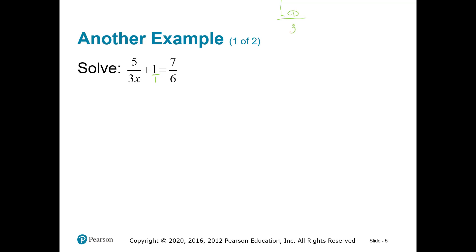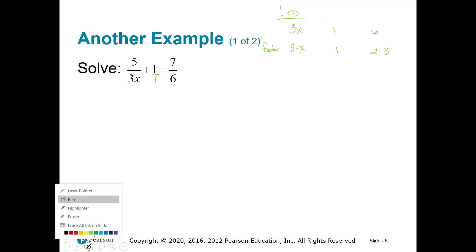One of my denominators is 3x, the second one is 1, and the third one is 6. Remember, the first step of finding the LCD is to factor. Well, that's 3 times x. That's just a 1. And that 6 is 2 times 3. You want to make these all look the same.